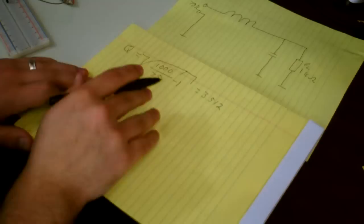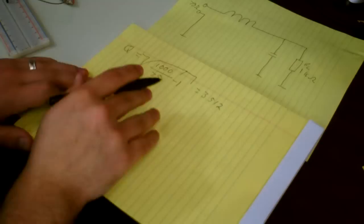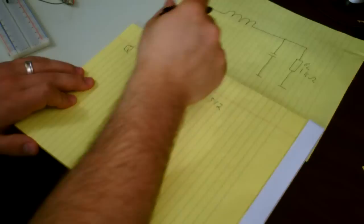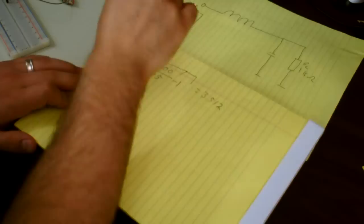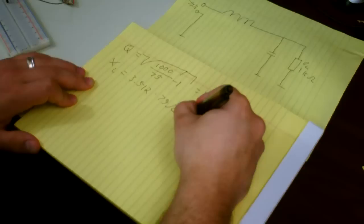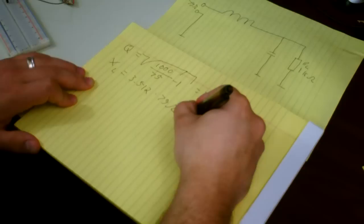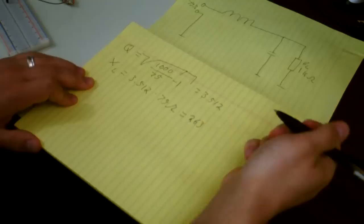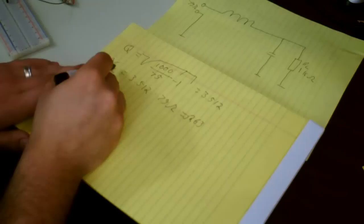To get the series inductor's impedance, we multiply the source impedance by Q. So XL equals 3.512 times 75 ohms, which equals roughly 263.4 — rounded to 263. We put j in front to mark that it is an inductive impedance.